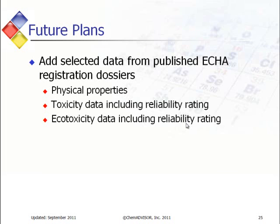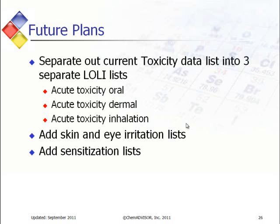Looking forward to what we plan on incorporating into Lawley in the future, we expect to incorporate selected data from published ECHA registration dossiers. That would include physical properties, but also toxicity data including the reliability rating, and ecotoxicity data including the reliability rating. We are also expecting to separate our current toxicity data list into three separate Lawley lists — one for each route of exposure — so instead of a single list ID 571, we will have three: acute toxicity oral, acute toxicity dermal, and acute toxicity inhalation. We are also planning on adding specific new Lawley lists for skin and eye irritation, and also sensitization lists.